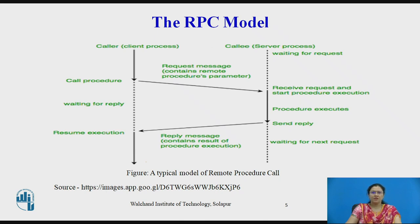The server process executes the procedure and then returns the result of procedure execution in a reply message to the client process. Once the reply message is received, the result of procedure execution is extracted and the caller's execution is resumed. The server process is normally dormant, awaiting the arrival of the request message. When one arrives, the server process extracts the procedure's parameters, computes the result, sends a reply message, and then awaits the next call message.